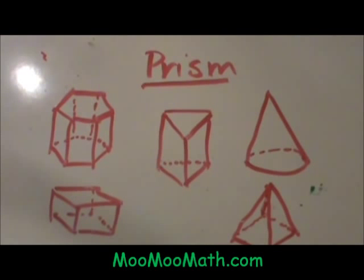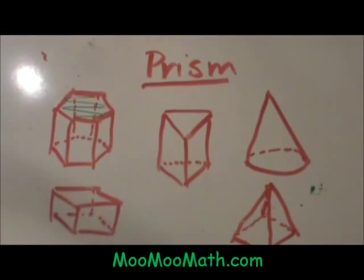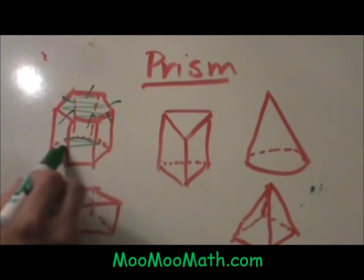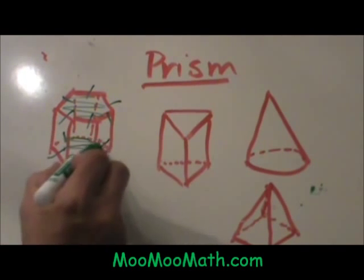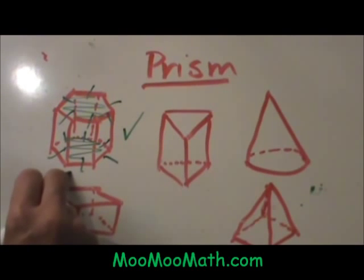Which ones of these have parallel bases? This one has a hexagonal base and it is parallel to this base. This one is a prism and this one would be called a hexagonal prism.